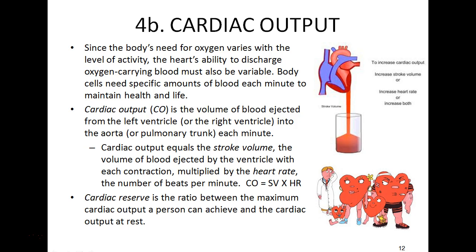Cardiac output (CO) equals stroke volume times heart rate: CO = SV × HR. Another term here is cardiac reserve — the ratio between the maximum cardiac output a person can achieve and the cardiac output at rest. Resting cardiac output is a function of heart rate and stroke volume, and the value of one influences the other. Individuals with smaller ventricular chambers need a faster heart rate since less stroke volume can be ejected — which is why we see faster heart rates in women and in newborn children.